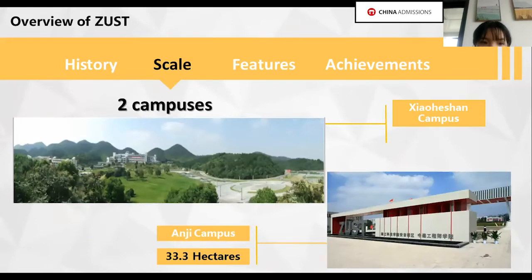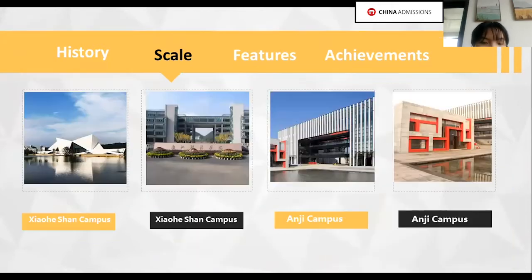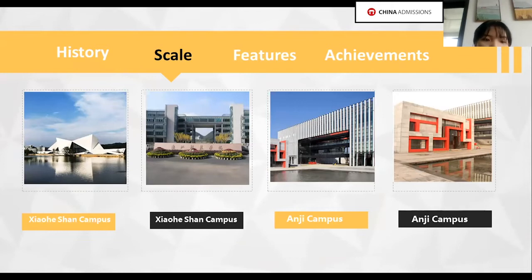As for the scale, our university has two campuses. One is Xiaoheshan campus, and the other is Anji campus — here is the gate of our Anji campus. Here are some pictures, including the newly completed student activity center, where we hold different kinds of student activities, and the canteen of Anji campus.